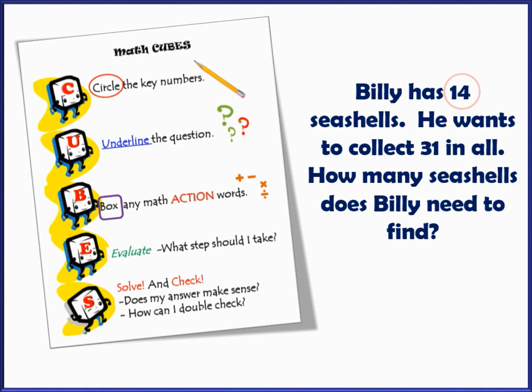In the cube strategy, you first circle the key numbers, underline the question, and box any math action words — which are the same as keywords. For example, you would box the word 'all.' As a student, you then feel ready to solve the problem: 14 and 31, and 'in all' usually means add, so I'm going to add — giving 45 seashells. However, that strategy led to the wrong answer because I was never focused on reading and deeply understanding the problem. Instead, we need strategies that help students truly dig into the problem, think about meaning, and visualize.